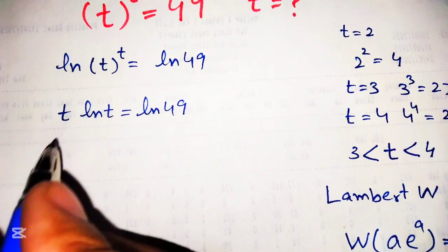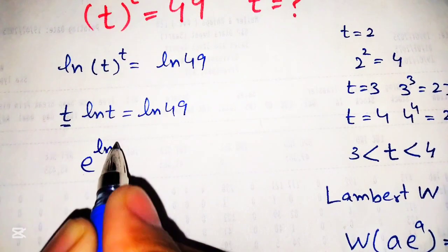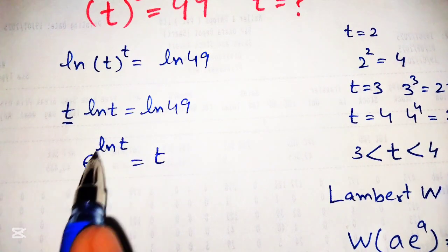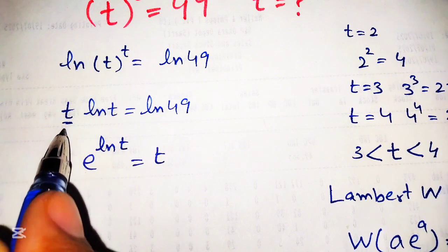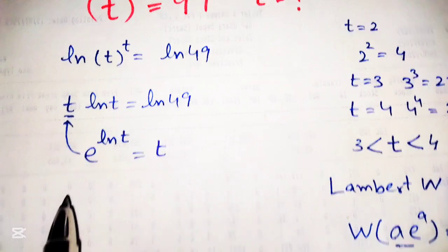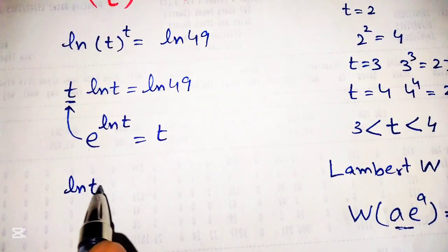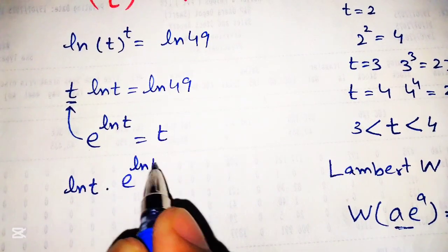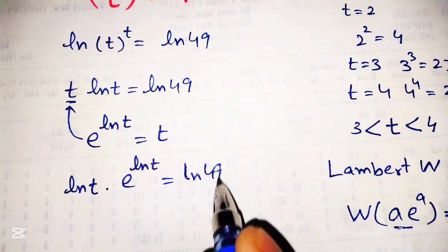We can write t as e raised to the power of natural log of t, since the natural log cancels with e and we get t back. So we rewrite the left side: natural log of t times e raised to the power of natural log of t equals natural log of 49.